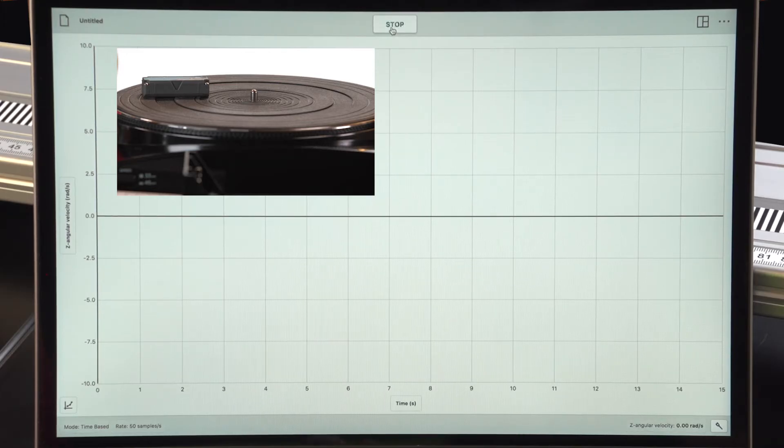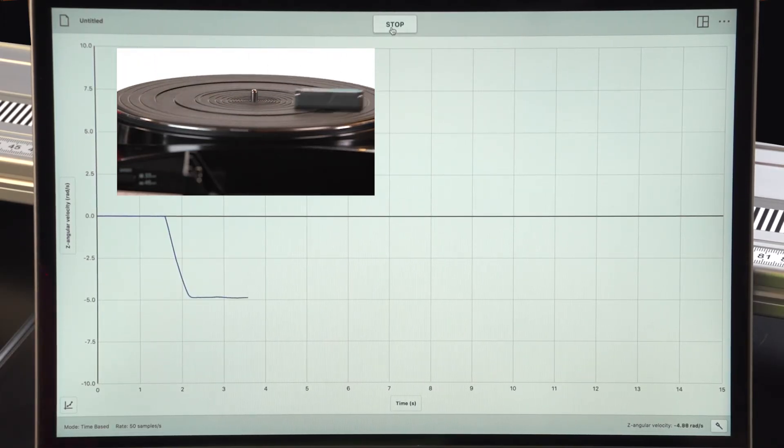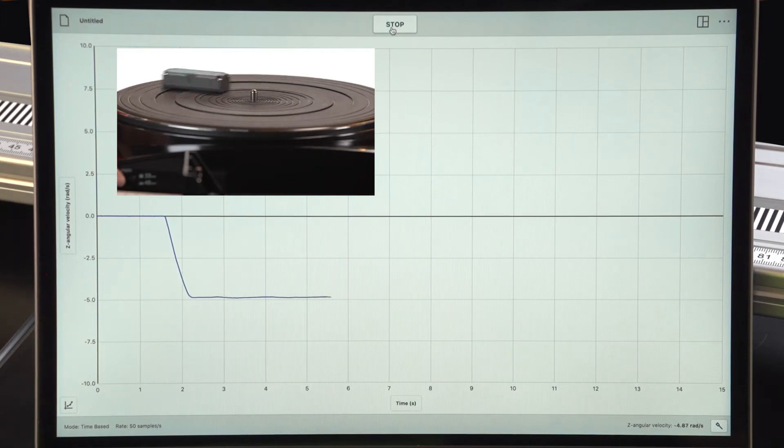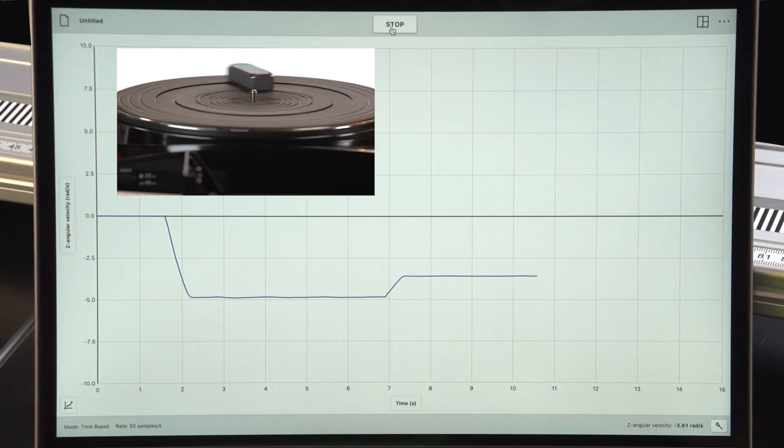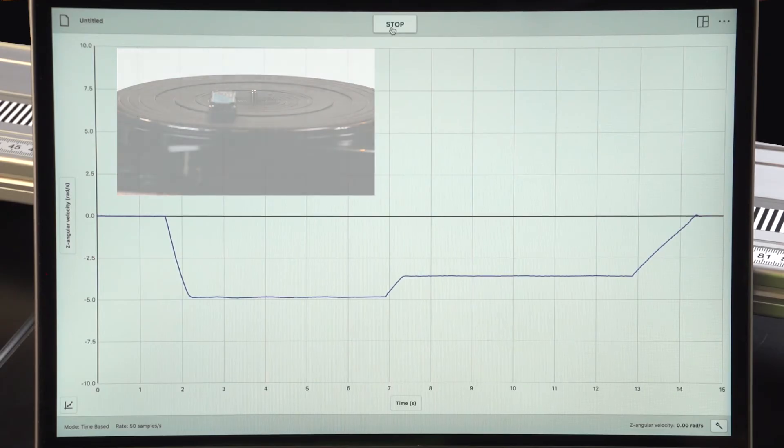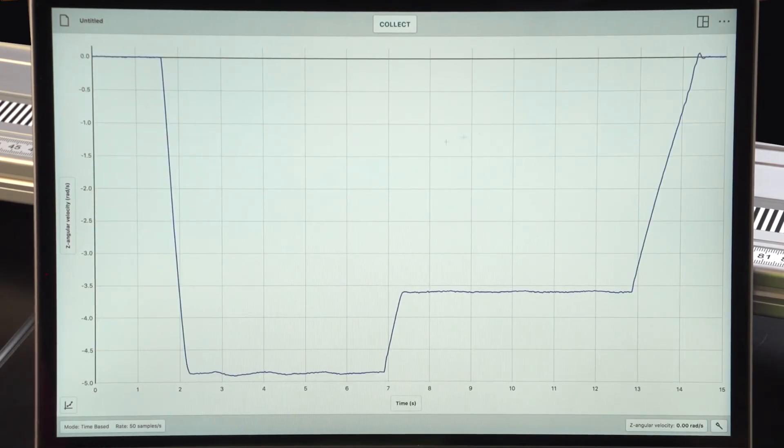I'm going to collect my data and start the turntable turning. Turntables typically have a couple of different rotation rates, so I'm going to change the rotation rate so I can compare and then turn it off. So now I can examine this data and look at what the rotation rate was in each speed for the turntable.